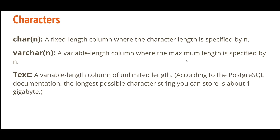CHAR is a fixed-length column where the character length is specified by n. If you specify a length of 5, you can only store a string containing 5 characters; storing more will give an error. VARCHAR also has a specified length n, but the key difference is memory: if you define CHAR as length 10 but store only 5 characters, it consumes the full 10 bytes. With VARCHAR, it only consumes as much memory as the actual stored string. TEXT has unlimited length — according to PostgreSQL documentation, up to about one gigabyte.